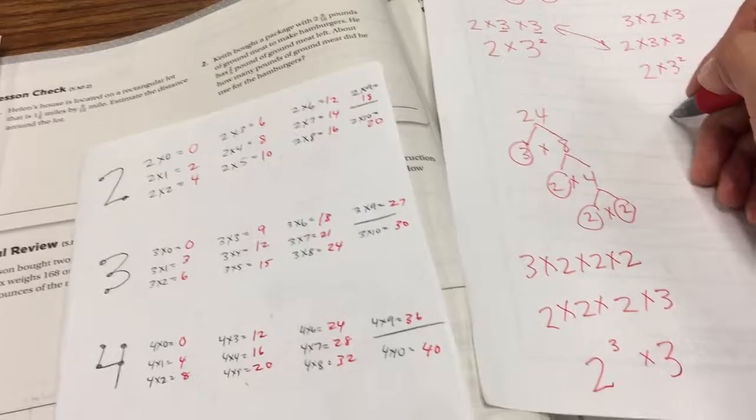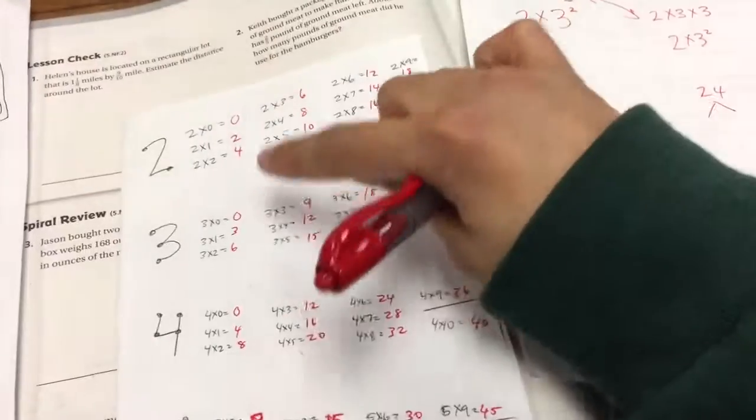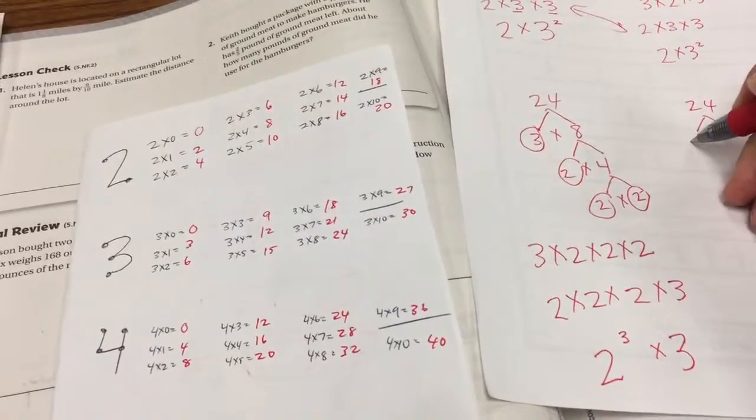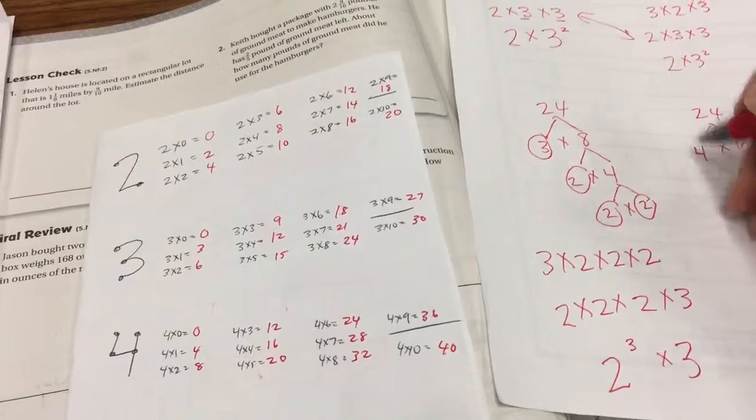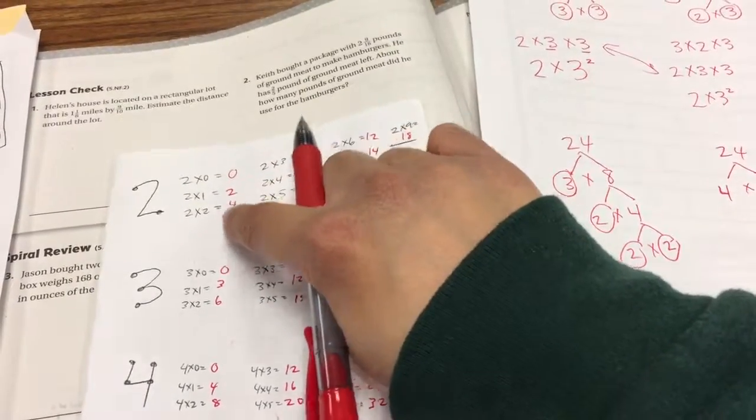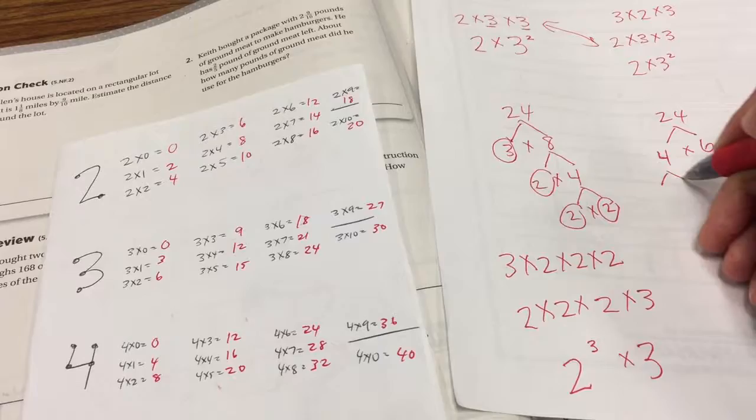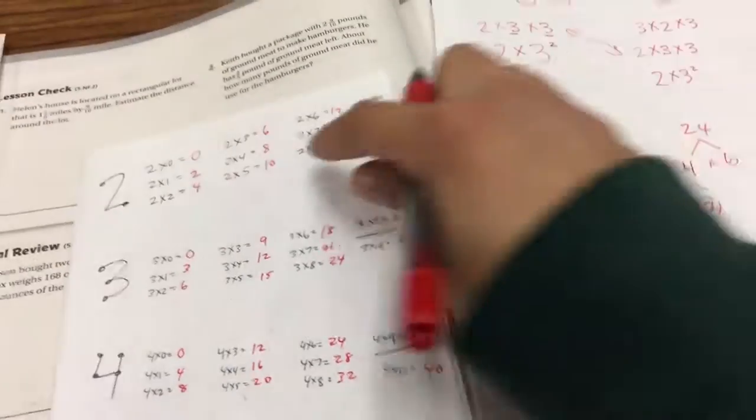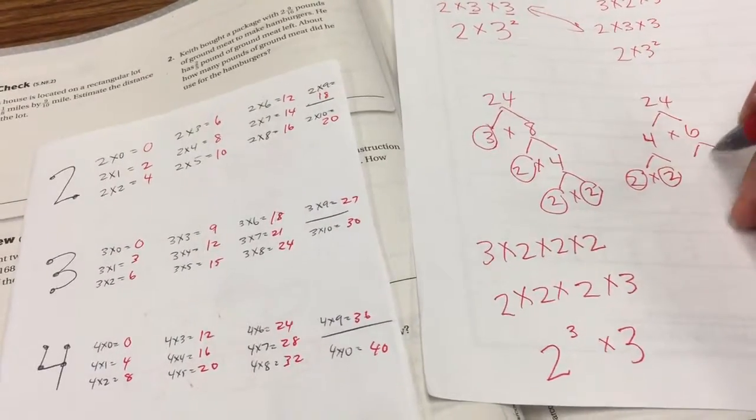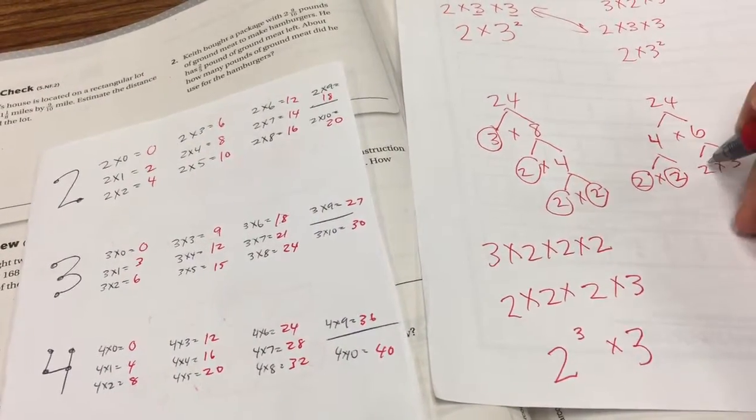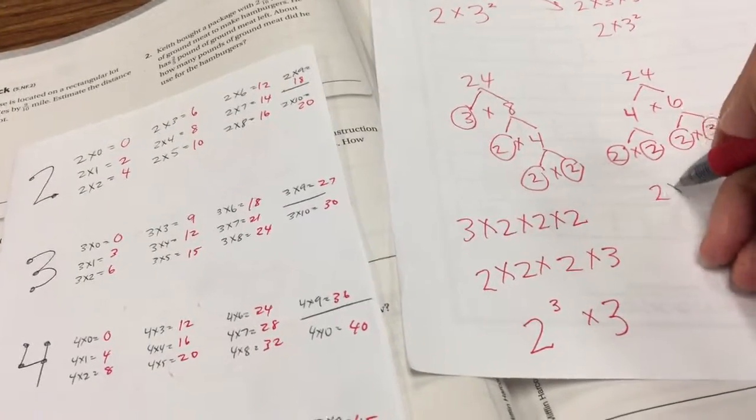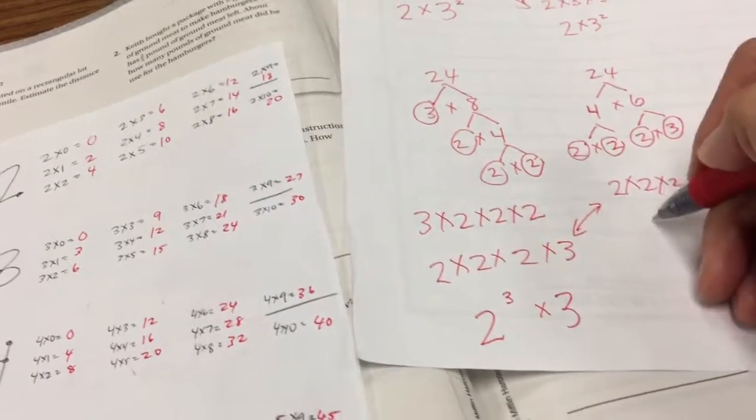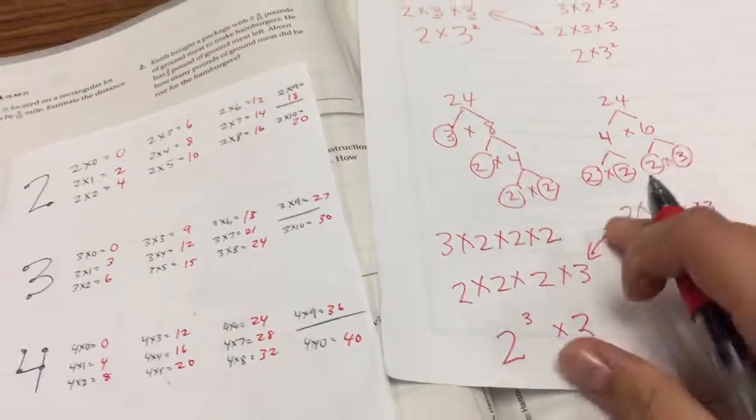I'm going to do the number 24 again. And this time, I'm going to use a different math fact to begin with. So I'm going to look for 24 somewhere else. Oh, there it is. 4 times 6 equals 24. 4 I found over here, and it's 2 times 2. And 2's are prime numbers. 6 is right over here, 2 times 3. 2 and 3 are prime numbers. And so here you get 2 times 2 times 2 times 3. And so you could do 2 to the 3rd times 3, since it's already in ascending order. So that's how to do prime factorization.